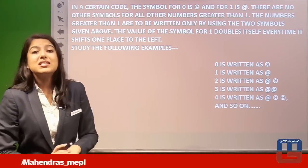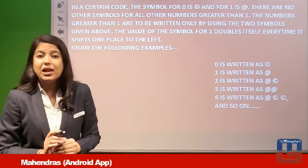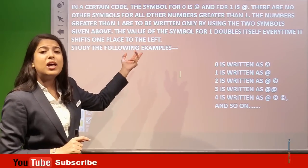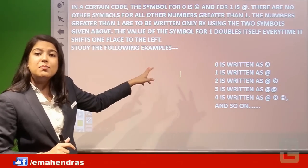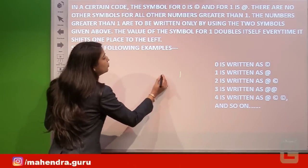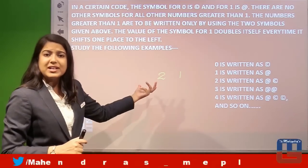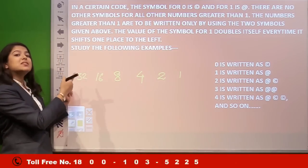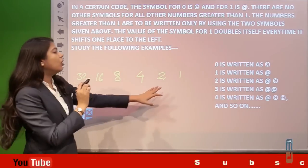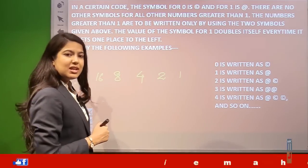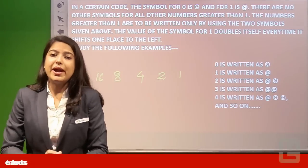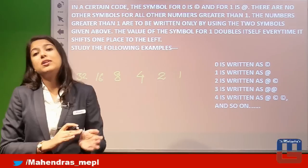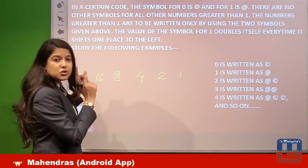The key instruction is: the value of the symbol for 1 doubles itself every time it shifts one place to the left. Starting from 1, moving left it doubles: 1, 2, 4, 8, 16, 32, 64, and so on. You must remember this series — 1, 2, 4, 8, 16, 32 — because without it you will get confused in every question.